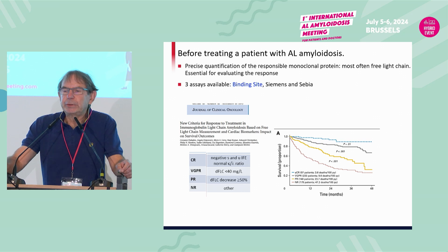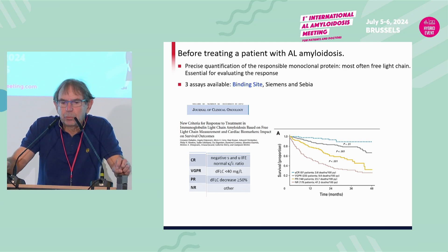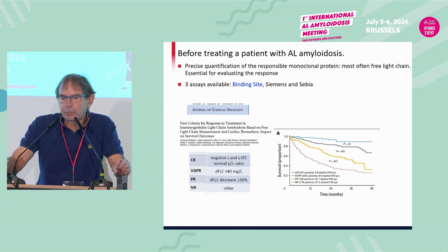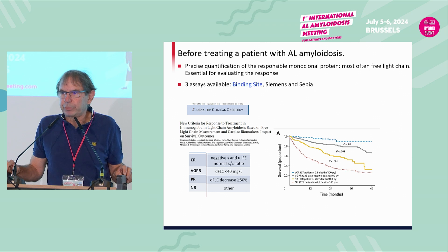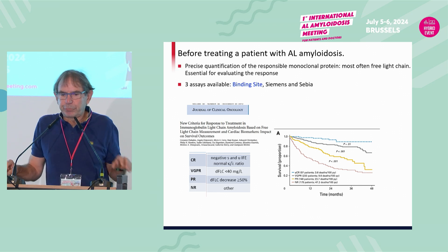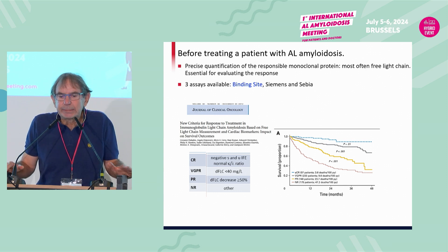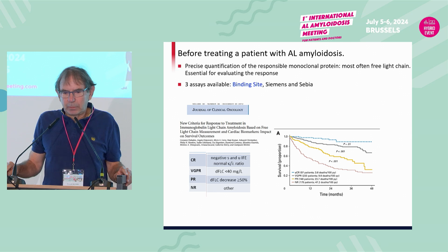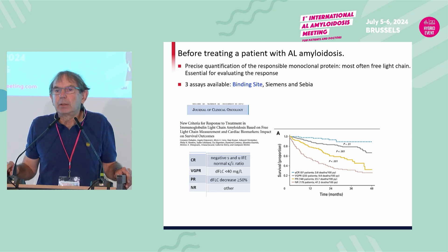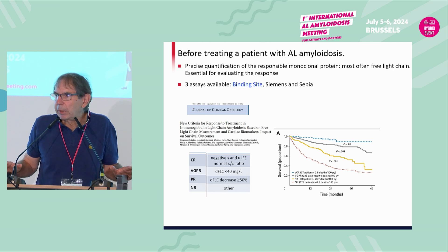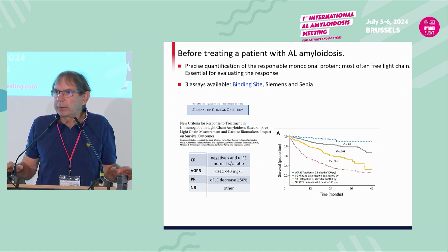Before treating the patient, you have to do a precise quantification of the responsible monoclonal protein, and most often it's free light chain. We have three assays, with the binding site being the most used. It was used in the classical criteria of response, and the survival in patients with AL amyloidosis is clearly dependent on response.